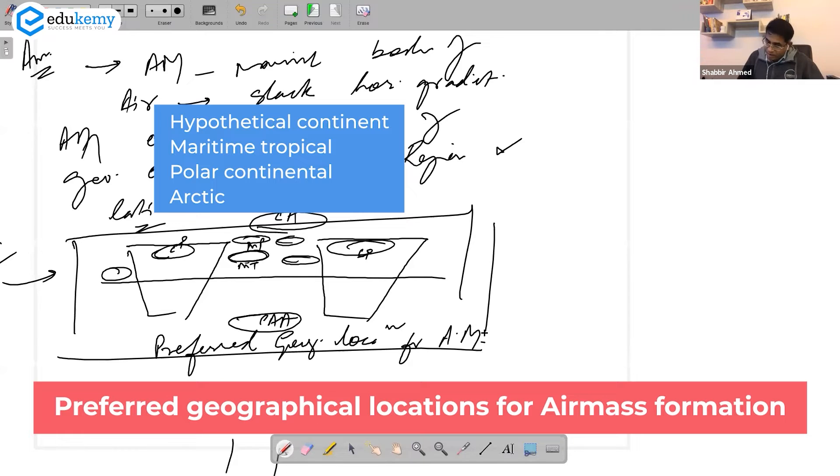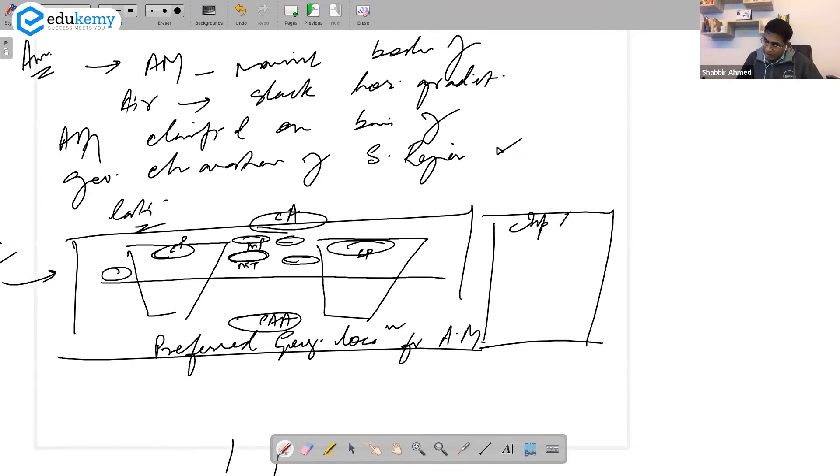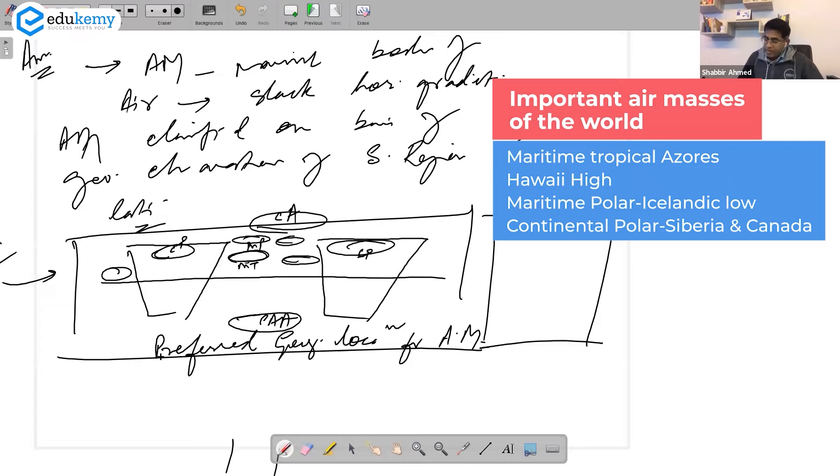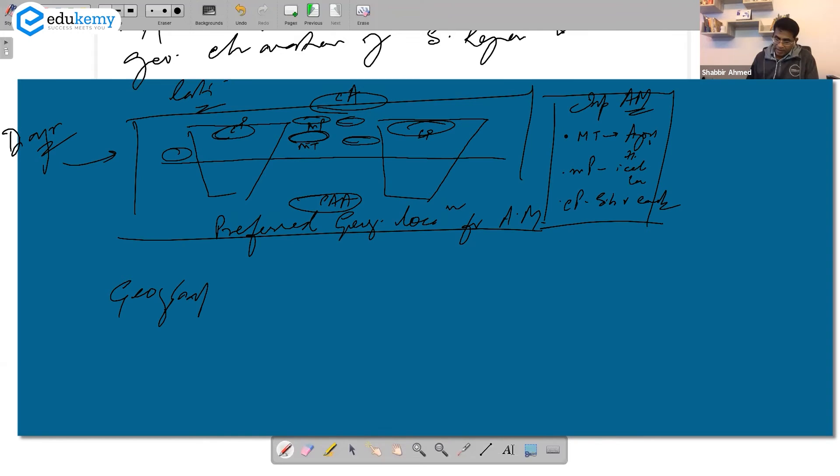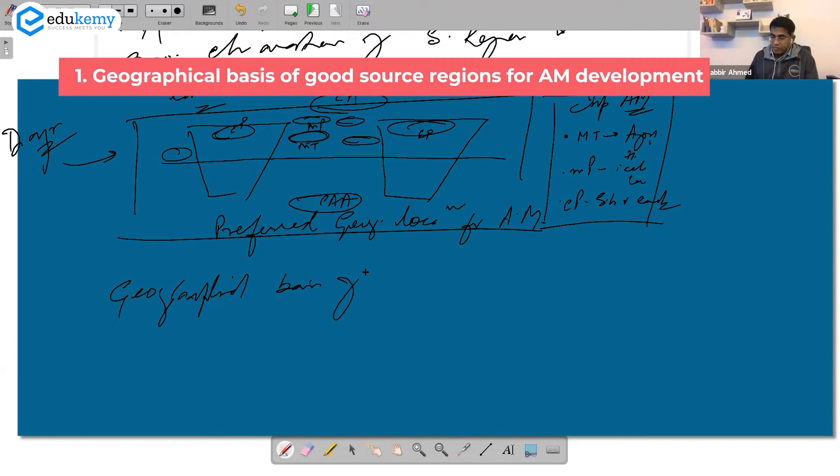And you probably could also have important air masses of the world. What are the important air masses? Maritime tropical - Azores and Hawaiian high. Maritime polar near Icelandic low. Continental polar both Siberia and Canada. At least you have shown the examiner you know how they are distributed, what are the important names. And then you could discuss what is the geographical basis of good source regions.